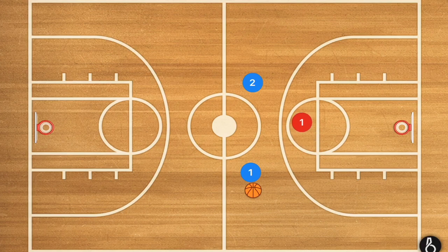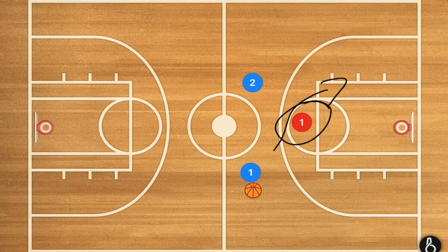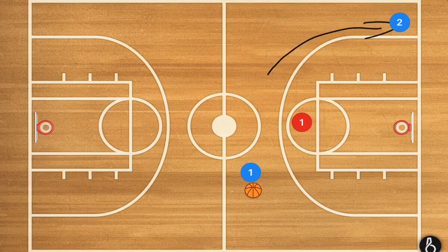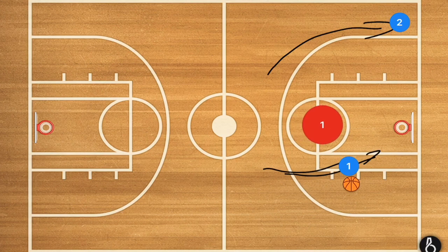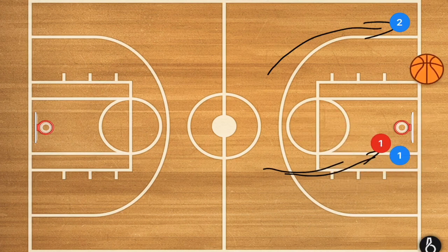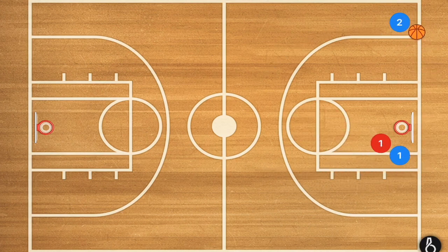An option that we see teams like the Golden State Warriors use is instead of having these players cross or try to disrupt what player one the defender is doing, they'll have the player without the ball leak to the corner, player one attack the rim to draw that defender to him, and then do a hammer-style pass out to player two for a three-point shot.